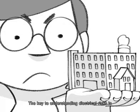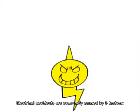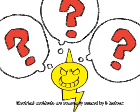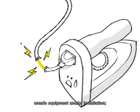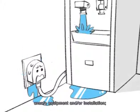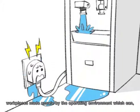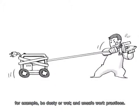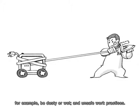The key to understanding electrical risks is to assess hazards within your facility. Electrical accidents are commonly caused by three factors: unsafe equipment and/or installation, workplaces made unsafe by the operating environment which can, for example, be dusty or wet, and unsafe work practices.